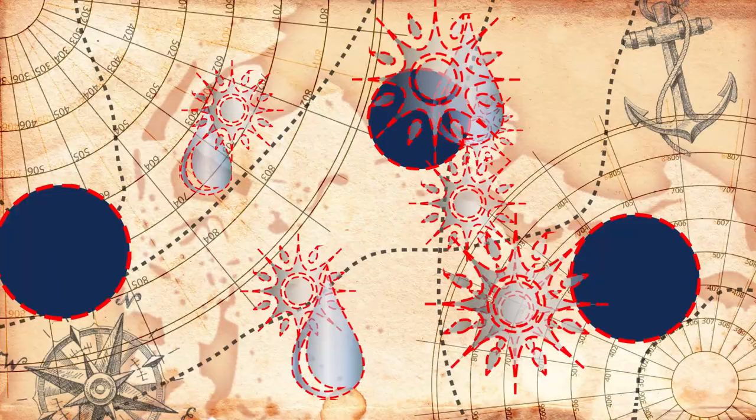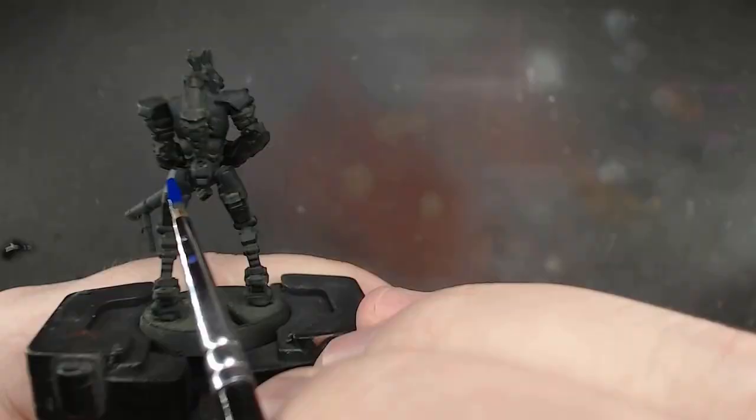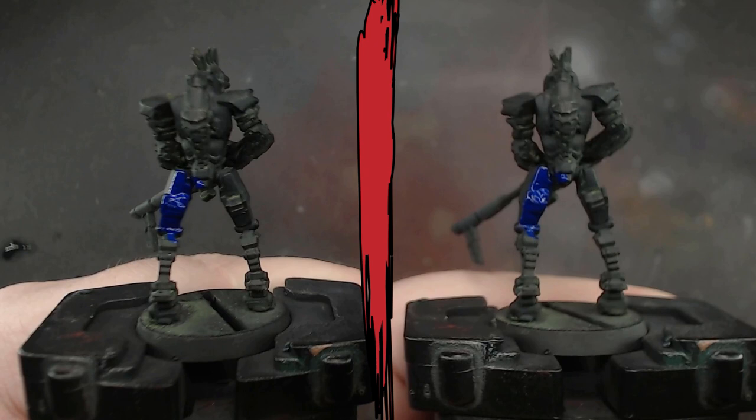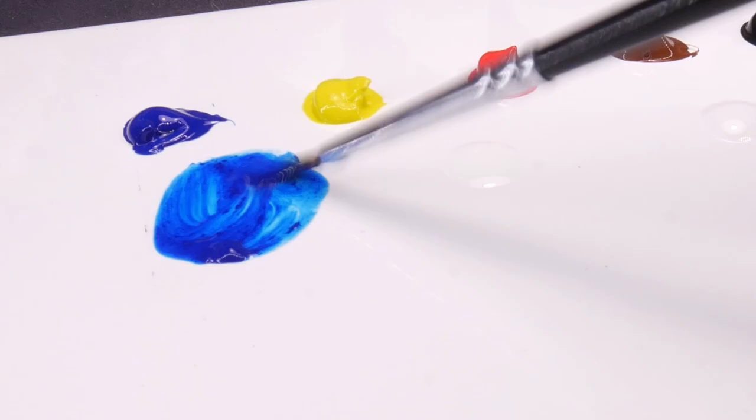And every time we do, it thins out that pigment to binder ratio, which in turn makes the paints more transparent. It's why sometimes we struggle with thinning and transparency. We don't want our paints thick so they don't fill in the details, but we don't want them so thin that they don't cover either.